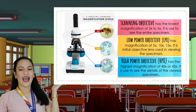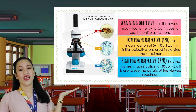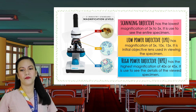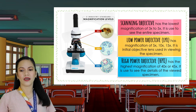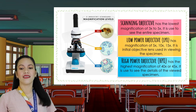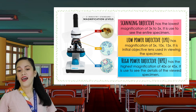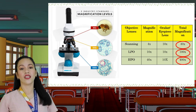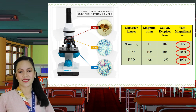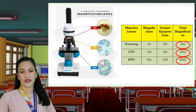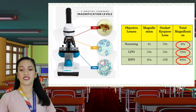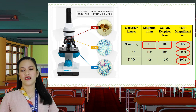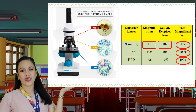The third lens is called the high-power objective, or HPO. It has the largest magnification of 40x up to 45x. If you wish to view a certain part of the specimen in more detail, this lens is highly recommended. The total magnification of the observed specimen is determined by multiplying the magnification of the ocular (eyepiece) and the objective lenses. For example, if the scanning objective is 4x and the ocular is 10x, the total magnification is 40x.